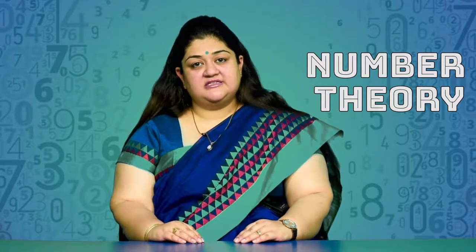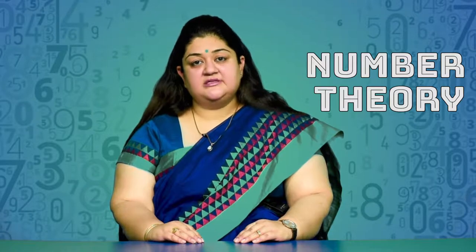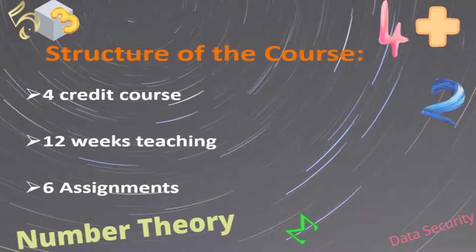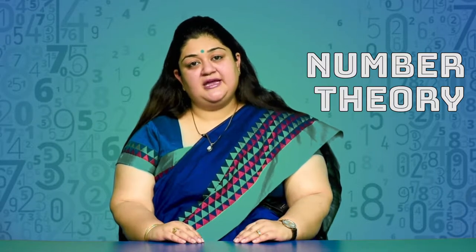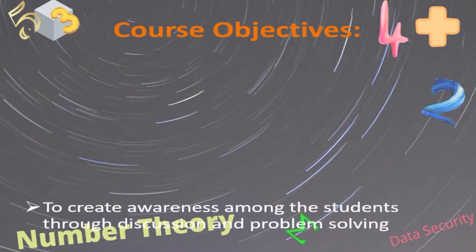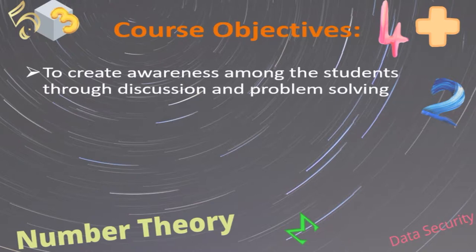Let us have a brief look at the course content. This course is going to be a 4-credit course with 12 weeks of teaching including 6 assignments. The main objective of the course is to create awareness among students with an introductory level course in number theory towards key areas through discussion and problem solving.